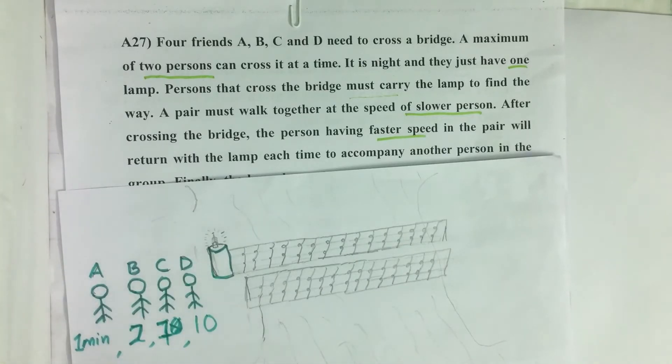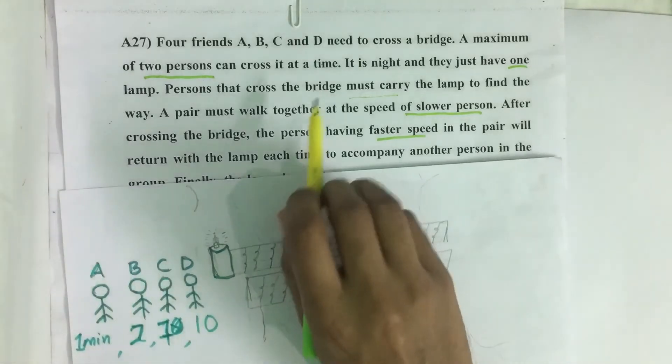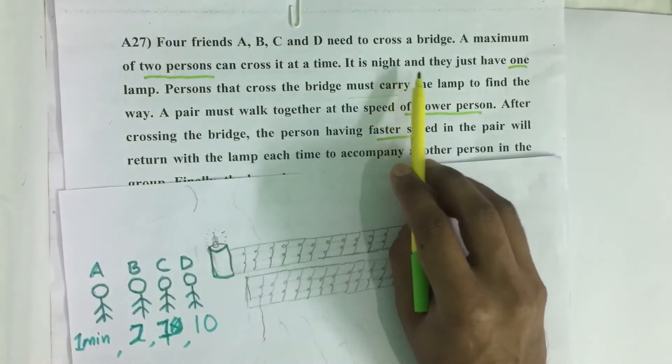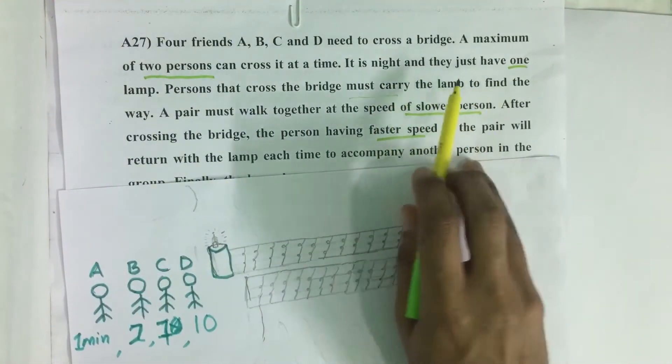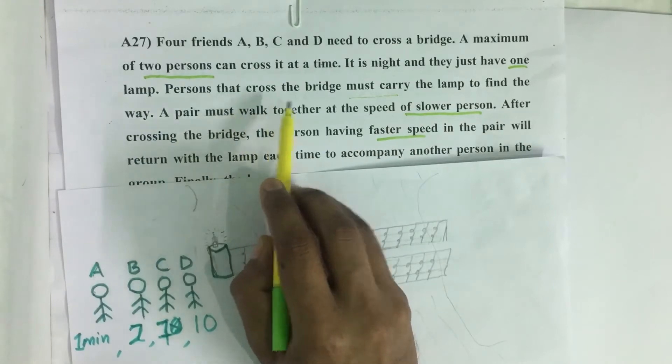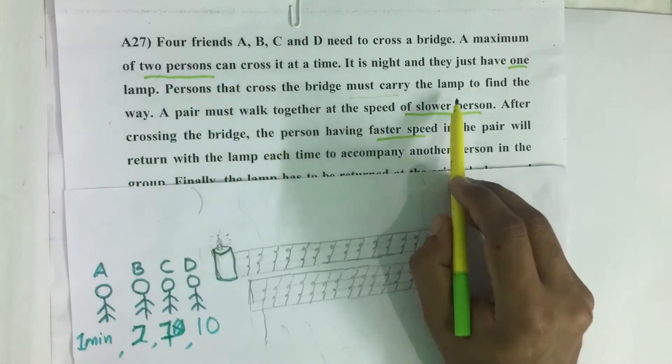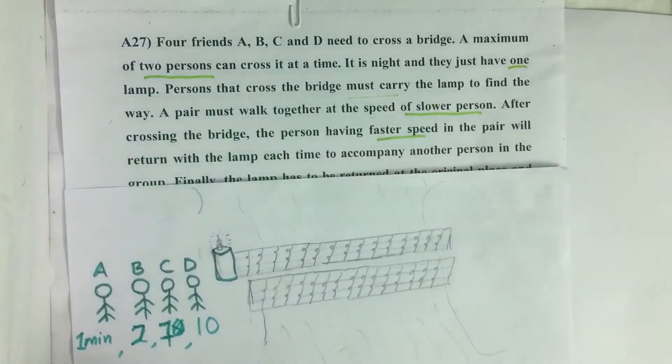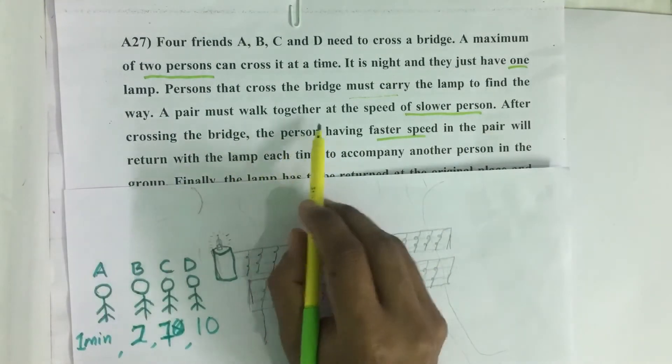A maximum of two persons can cross it at a time. It is night and they just have one lamp. Persons that cross the bridge must carry the lamp to find the way. A pair must walk together at the speed of slower person.